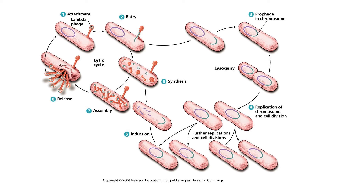Step five is induction. The virus lambda senses that the E. coli is in serious trouble and is actually going to die. So it needs to produce its progeny and get out before the E. coli dies. Step five induction is triggered by things like exposure to X-rays, ultraviolet light, and carcinogens — all things that would actually kill the E. coli host cell. In induction, the lambda DNA removes itself from the E. coli chromosome, and then the E. coli chromosome is broken down into little pieces.